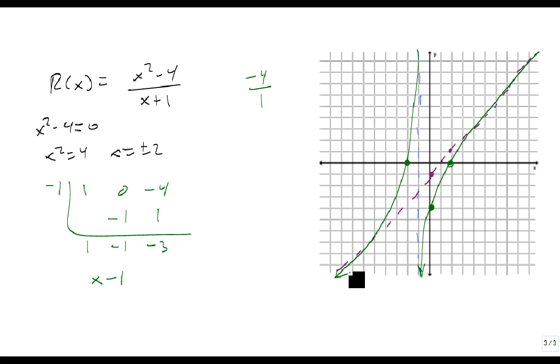So graphing obliques works just the same, except that instead of being a horizontal line, we get a slant. That's how we graph rational functions containing obliques.